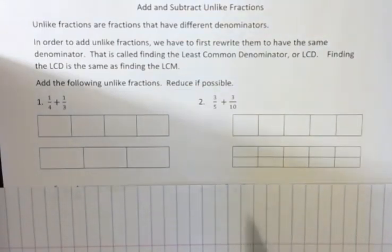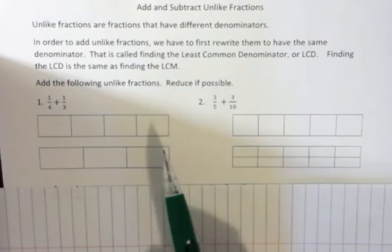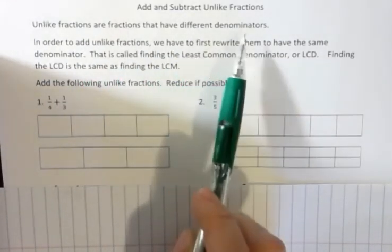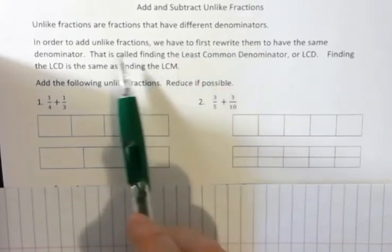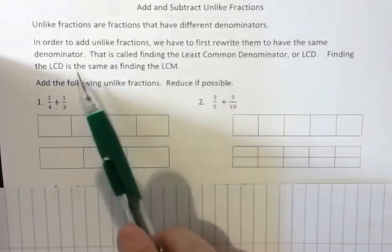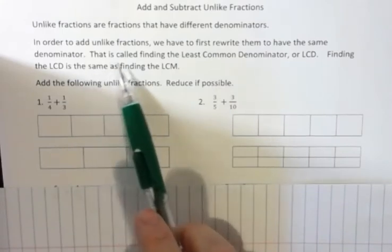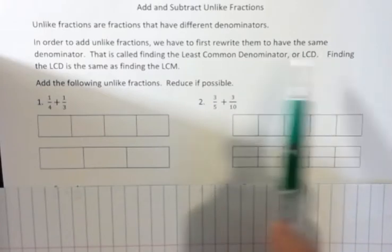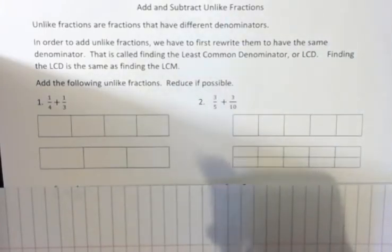Hi, I'm Carly McEvoy. I'm talking about adding and subtracting unlike fractions. Unlike fractions are fractions that have different denominators. In order to add unlike fractions, we have to first rewrite them to have the same denominator. That's called finding the least common denominator, or LCD. Finding the LCD is the same as finding the LCM.